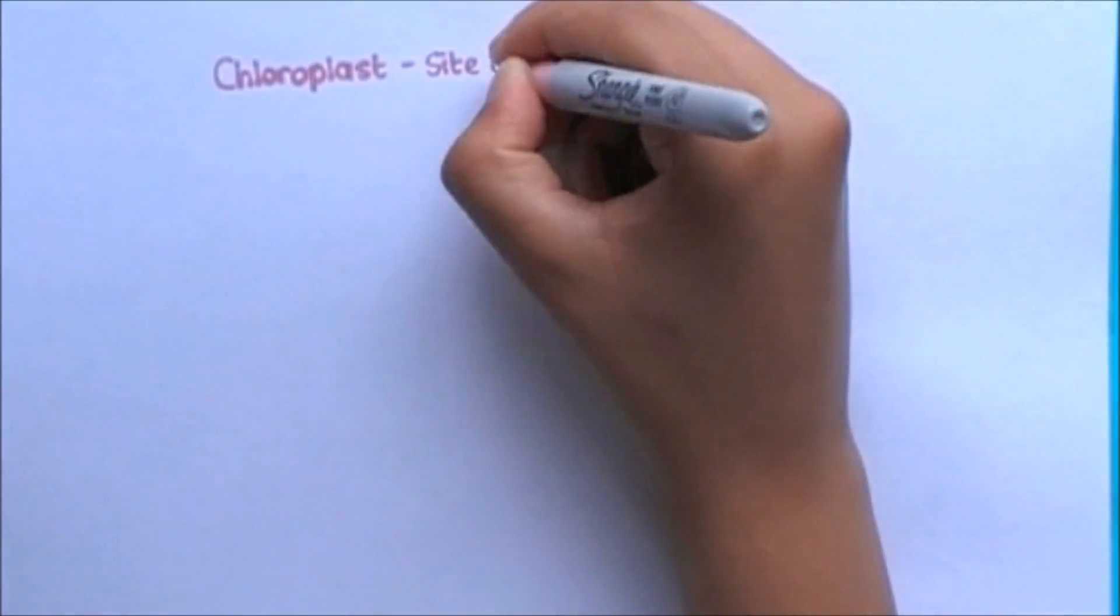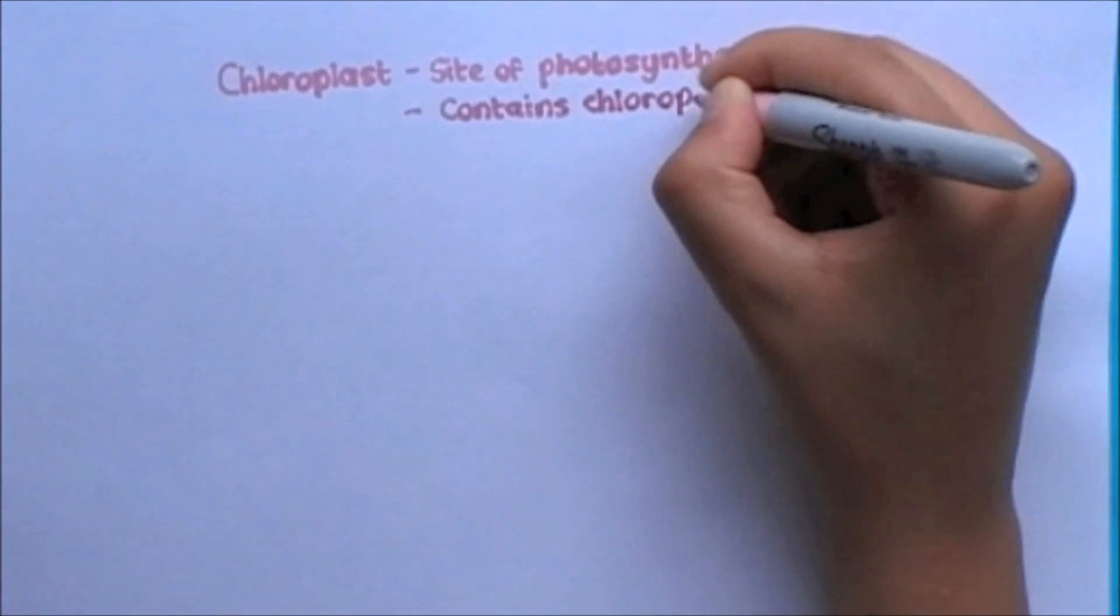The chloroplast is the site of photosynthesis and contains chlorophyll. This is what gives plants their green color.